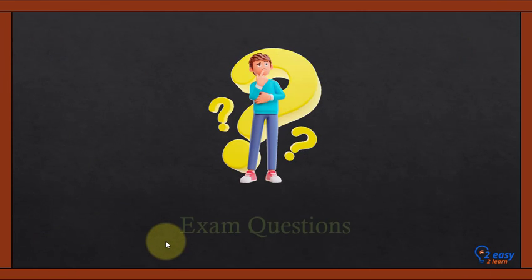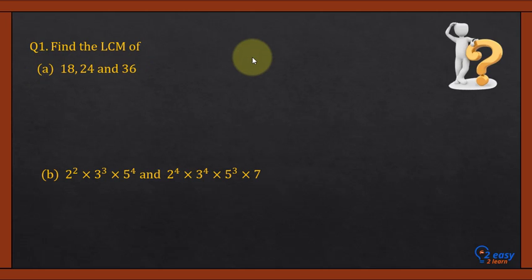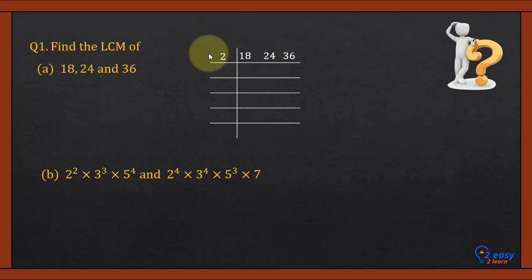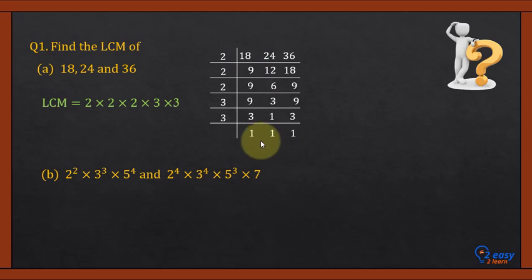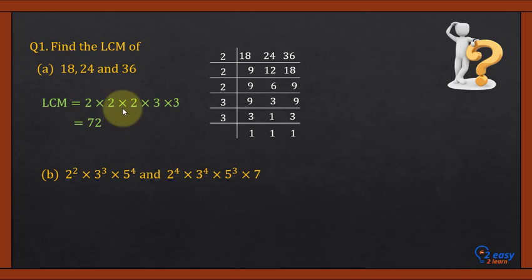Let's discuss a few exam questions. I'd prefer you pause the video and solve these two questions first. Using the division method, make a division table and select the smallest prime number, keep dividing until we get 1, 1, 1 in the last row. The LCM is the product: 2 × 2 × 2 × 3 × 3 = 72. This means 18, 24, and 36 can all divide 72 completely without any remainder.